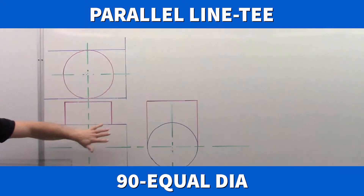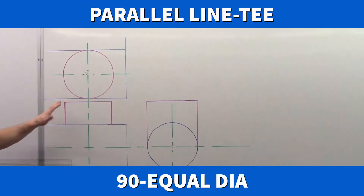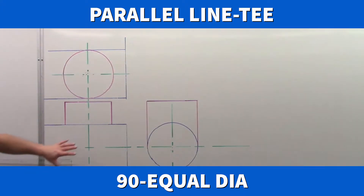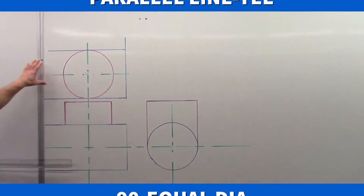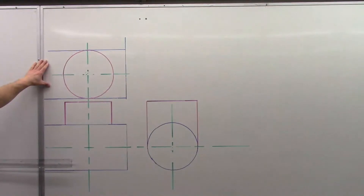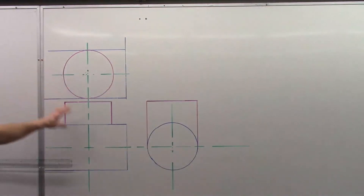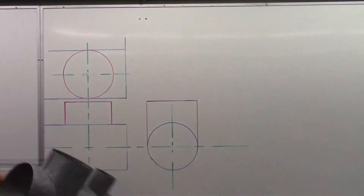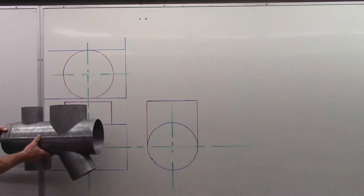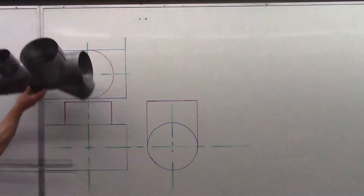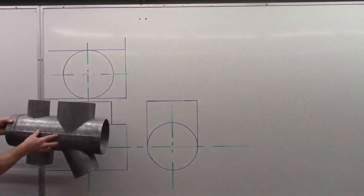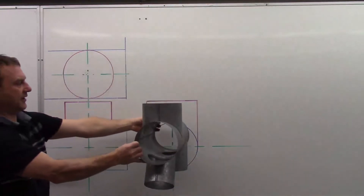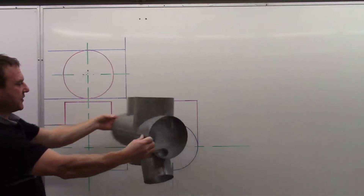I have that drawn here as we'd see in an orthographic projection type of view. We've got a front view here, or front elevation. We have a top view or plan view, and then we have the right side view, looking at it from this way. So we get those three views.